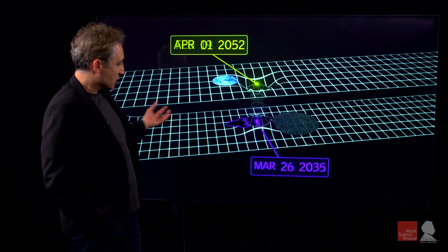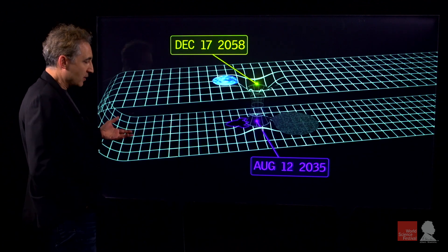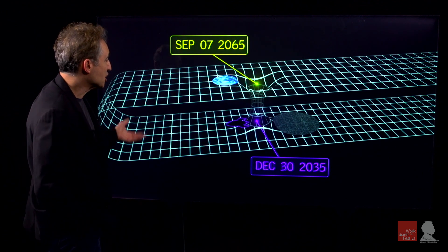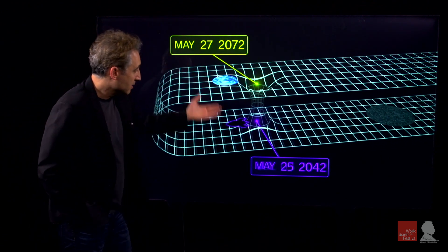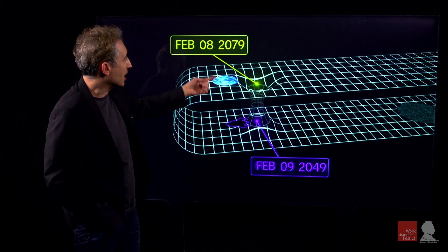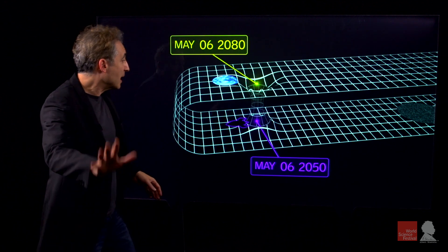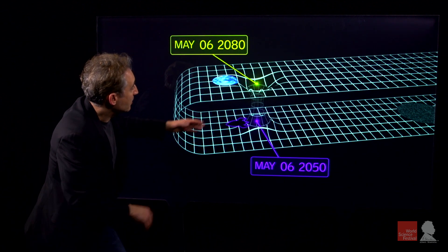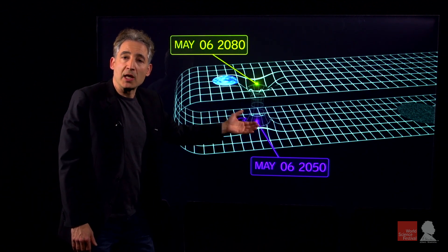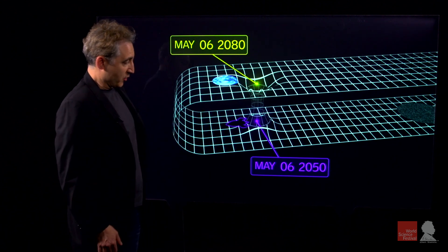If the ship then returns to the vicinity of Earth, by the time it gets back to its starting point, there'll be a time difference between the two clocks. Again, in this case, a 30-year time difference just as we found before. Now notice, for the moment, the wormhole hasn't really played any role, it just went along for the ride.